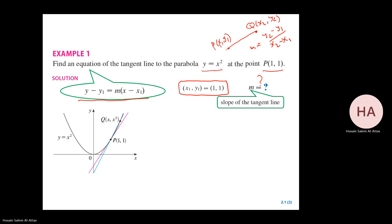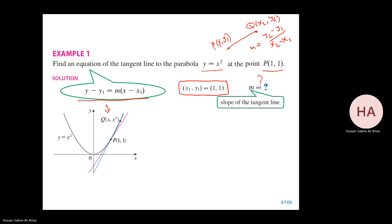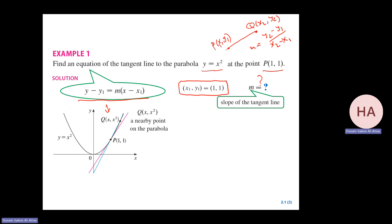The idea is: I will take another point Q. So now this blue line is not the tangent line — it's a secant line through points P and Q. I will try to choose X in a way so that it goes nearer and nearer to 1, smaller and smaller. I'll take this point Q as a nearby point, and then let X go to 1. Choose X not equal to 1, so Q not equal to P.